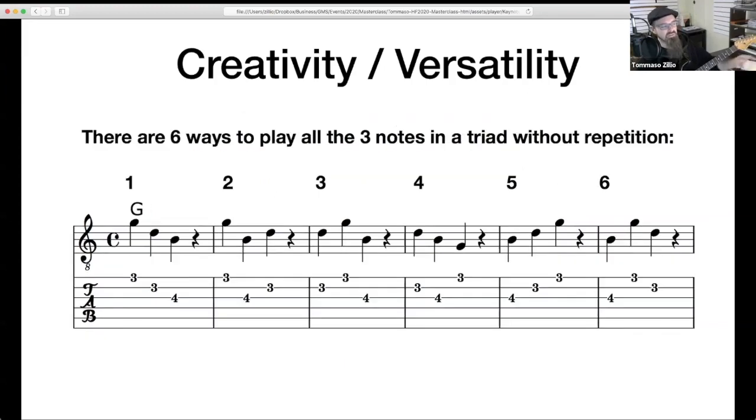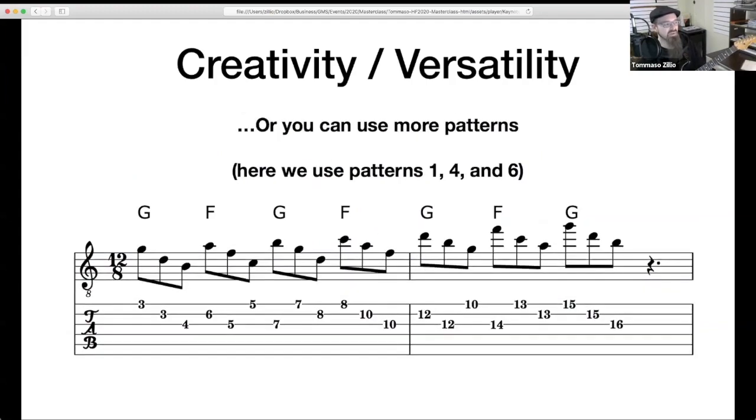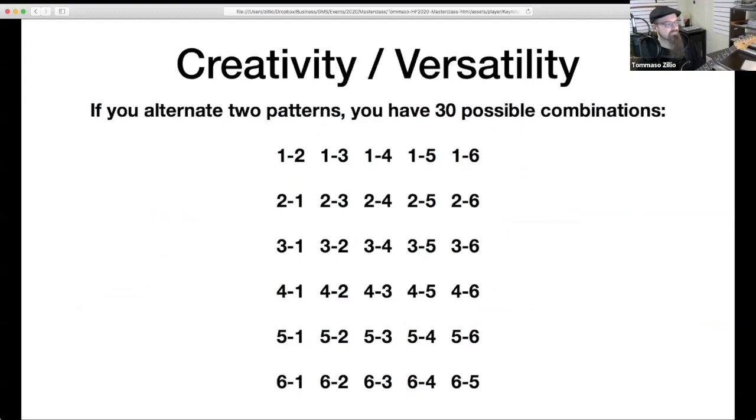Now, there are, as you see, six possible ways to play this. But if we alternate two of the six patterns, I have 30 possible combinations. I can use pattern one and then pattern two or pattern one and then pattern three or pattern one and pattern four. I'm not going to read all of them. This seems a lot like mathematics. It is.